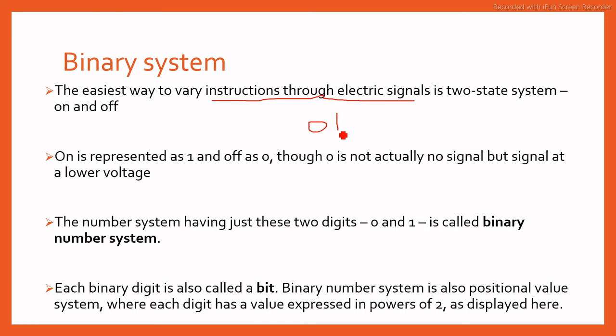On is represented as 1, that means when the signal is high value, then 1. And 0 is off, but actually it represents lower voltage.